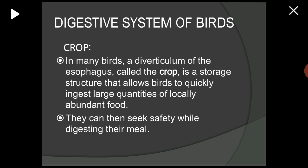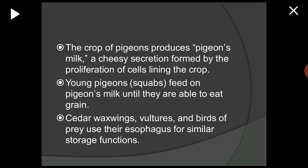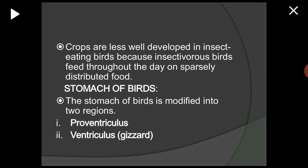The crop of pigeons produces pigeon's milk, a cheesy secretion formed by the proliferation of cells lining the crop. Young pigeons, also known as squabs, feed on pigeon's milk until they are able to eat grain. Cedar waxwings, vultures, and birds of prey use their esophagus for similar storage functions. Crops are less well developed in insectivorous birds because they feed throughout the day on sparsely distributed food.